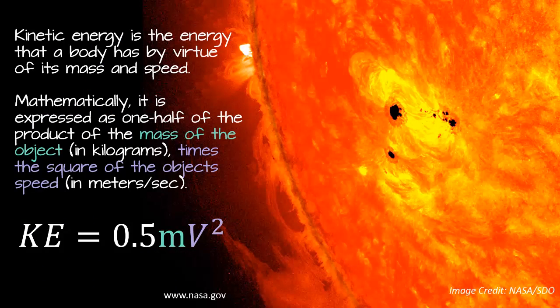Kinetic energy is the energy that a body has by virtue of its mass and speed. Mathematically, it is expressed as one half of the product of the mass of the object in kilograms times the square of the object's speed in meters per second. And here's our formula. KE, which means kinetic energy, equals 0.5 times m, where m is the mass of the object, times v squared, and v is the speed. We could also think of it as the velocity.